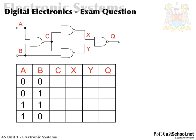C is the output simply of a NAND. Notice the only time the output is not a 1 at C is when the input is 1 and 1 — opposite to an AND. The X state is conditional on A and C, so we're looking at those two columns with a NAND again. So: 0 and 1 gives 1; 0 and 1 gives 1; 1 and 0 gives 1; and 1 and 1 gives 0. So that's X sorted.